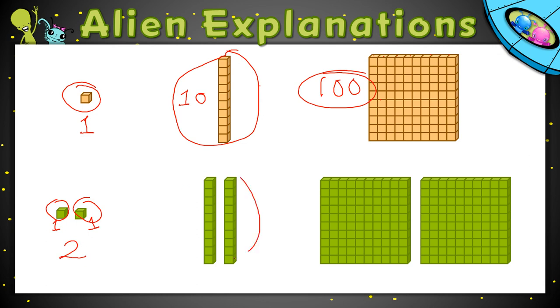What about this next group? I have 2 of my 10s here. 2 10s is 20. That's not the same as 2 flats like I have over here, because these are each worth 100. That's not the same as 2 10s.